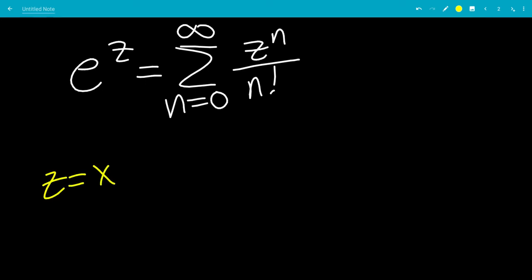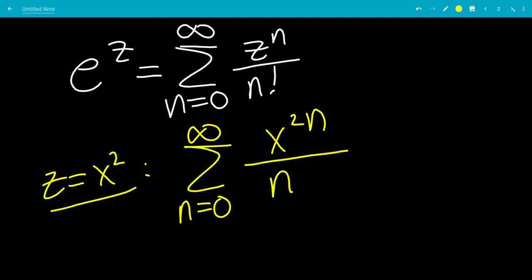Plugging in z equals x squared, you get the sum from n equals 0 to infinity. Instead of z, we have x squared to the n, but we can multiply that in. So that would be x to the 2n over n factorial. This equals e to the x squared.